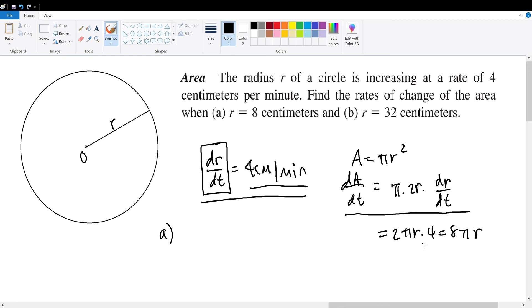And with this, we can find the area change when the radius is equivalent to some certain measurement.